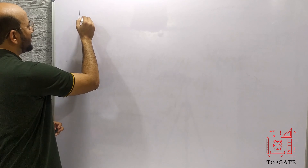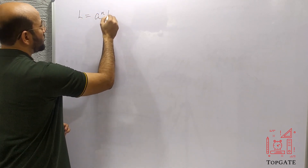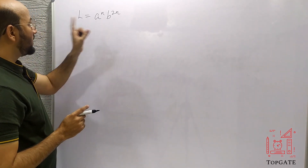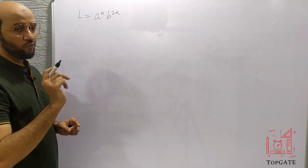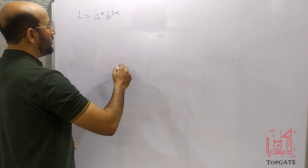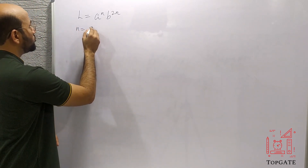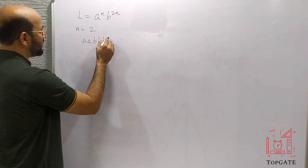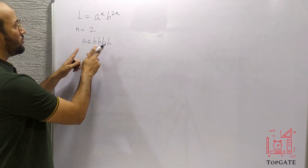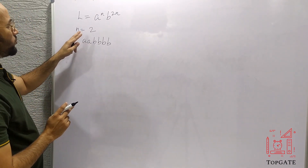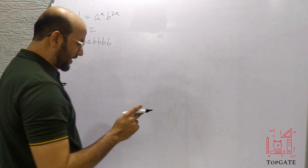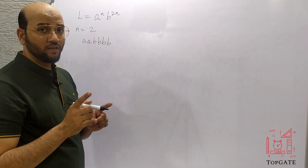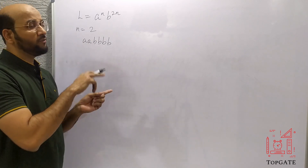We have to design a PDA for the language L equal to A to the power N, B to the power 2N — that is, B should appear twice as many times as A. So if N is 2 then B should be 4. For example, if N equals 2 the string will be AABBBB, and if N equals 1 we get ABB. I will design a PDA and then verify that the wrong string is not accepted.